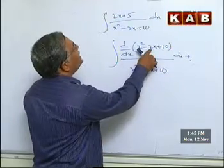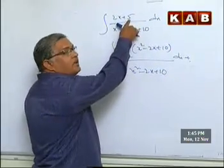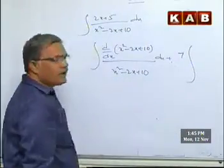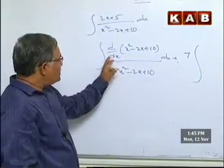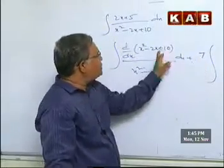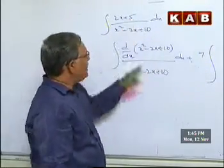Actually, when you differentiate minus 2 is coming, how much is available here? 5. So how much compensatory I should write? 7 I should write. Why? So that this 2x available minus 2 plus 7 minus 2 plus 7 giving you 5.